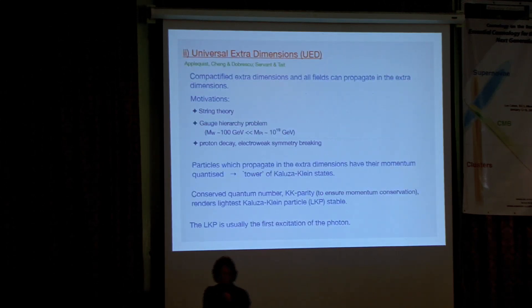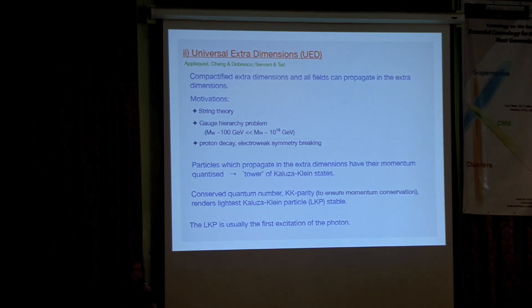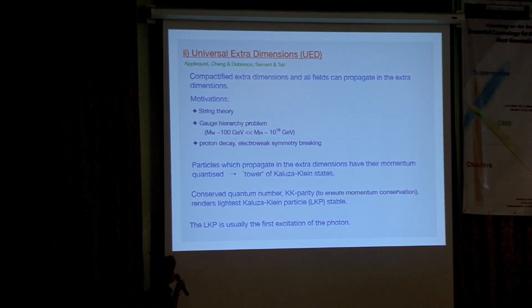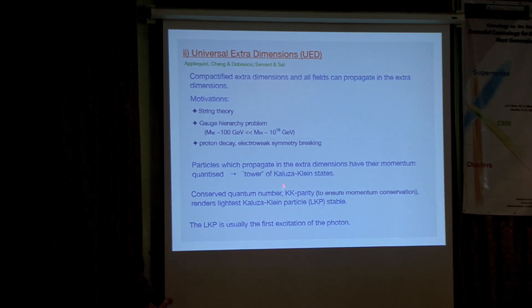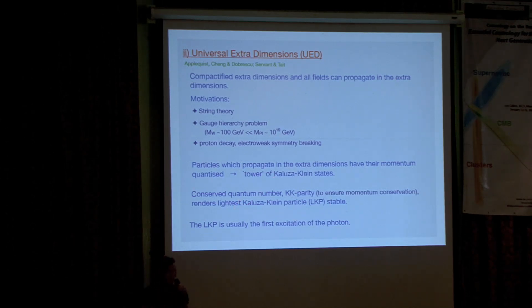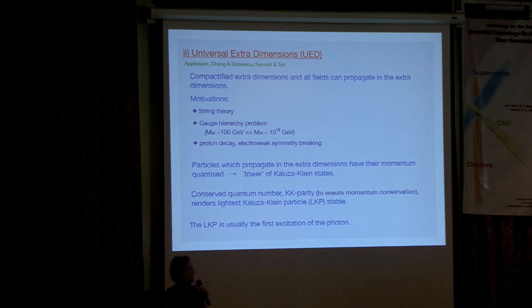I'll briefly mention another model just to emphasise that supersymmetry isn't the only game in town. This thing called universal extra dimensions has become popular over the last few years. It's a model with compactified extra dimensions in which all fields, not just gravity, can propagate in the compactified dimensions, with similar motivations to supersymmetry in trying to solve problems with the standard model. Particles propagating in the extra dimensions are quantised and have a tower of what's called Kaluza-Klein states. Again, we have a conserved quantum number — KK parity — required to ensure momentum conservation. Just as R-parity renders the lightest supersymmetric particle stable, KK parity renders the lightest Kaluza-Klein particle stable. In this case it's usually the first excitation of the photon, and it's a good dark matter candidate, just like the neutralino. Supersymmetry is probably our best bet, but it's not the only possibility.